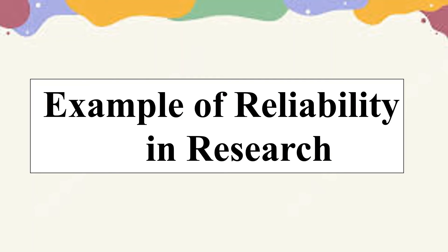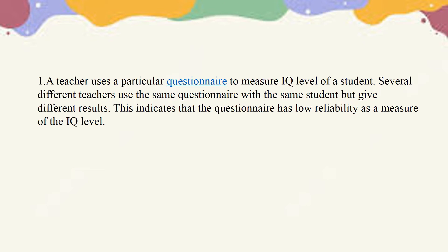Example of reliability in research. Example number one: A teacher uses a particular questionnaire to measure the IQ level of a student. Several different teachers use the same questionnaire with the same student but give different results. This indicates that the questionnaire has low reliability as a measure of IQ level.